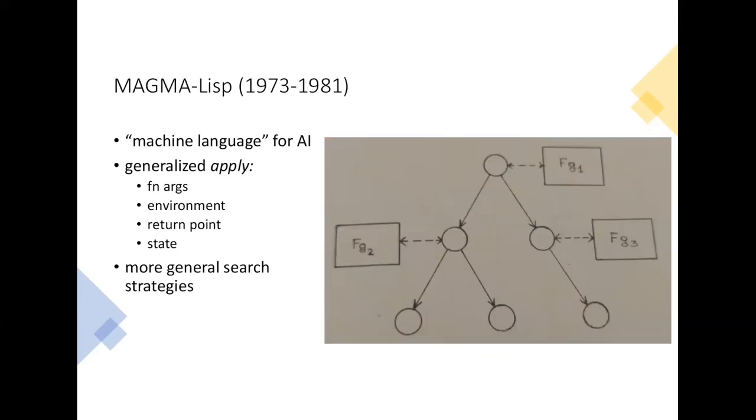MAGMA-Lisp instead is a longer story and it was developed in the early 70s as a machine language for AI. The idea was that the AI problems at the time were search in a tree of alternatives in search of a solution, and so Lisp was used to write the problems that did the search. But to allow more efficient and general search algorithms, we—I must say I am one of the authors of the thing—and so we sort of generalized Lisp.